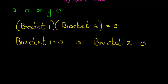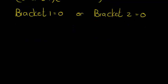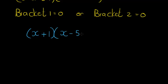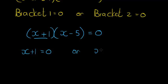Let's put this directly into an example. I have x plus one — that's one bracket — being multiplied by x minus five, and we get that the answer is zero. Then I know either x plus one is equal to zero, or x minus five equals zero. Because if x plus one equals zero and I multiply that zero with the other bracket, it doesn't matter what that bracket equals — the answer will be zero.